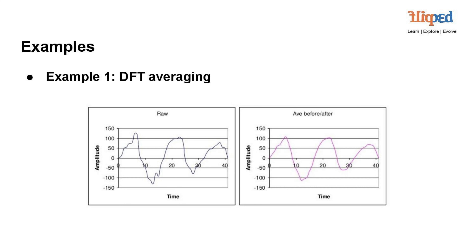Image 2: Averaged and smoothed curve. Contrastingly, this image showcases an averaged and smoothed amplitude vs. time curve. The graph represents the result of applying DFT (discrete Fourier transform) averaging to the original signal. By taking multiple DFTs of the signal and averaging their magnitudes, noise and irregularities are reduced, resulting in a smoother and more stable representation.